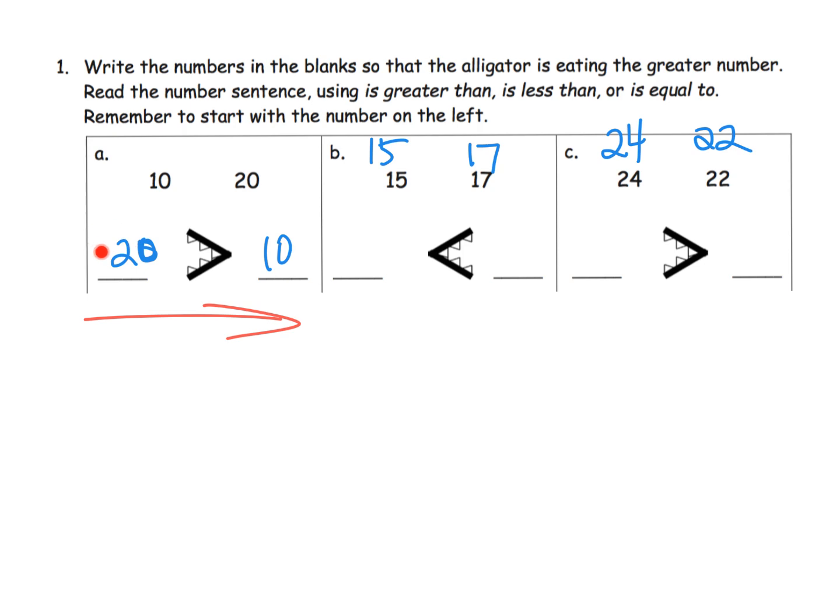Let's keep moving on. We've got 15 and 17. Let's put 15 here, let's put 17 there. Sure enough the alligator is eating the larger number. But remember as we read it from left to right we know that 15 is less than 17, so our number sentence is 15 is less than 17.